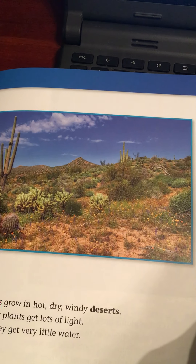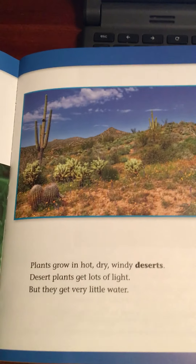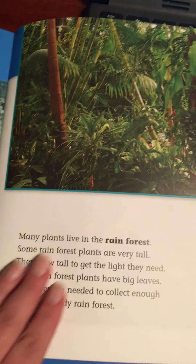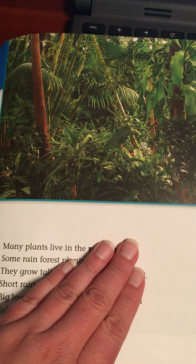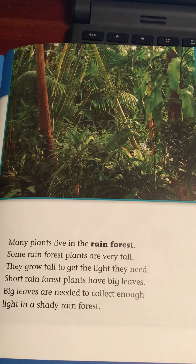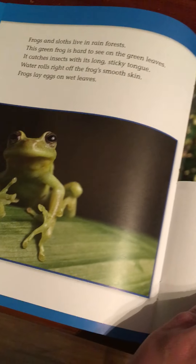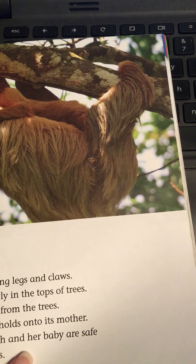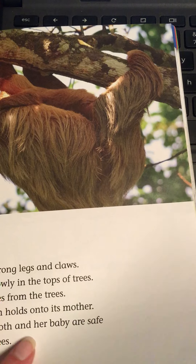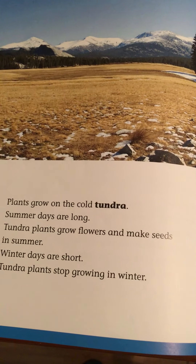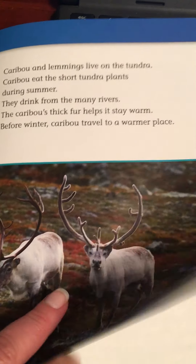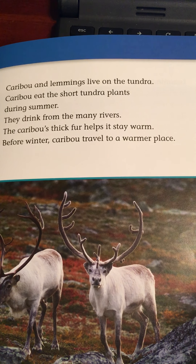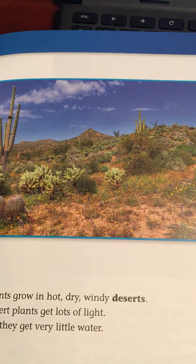We're going to do a quick review. A habitat that is wet and warm, where plants will grow and the plants grow very tall, is called a rainforest. Another habitat that is frosty and dry with long summer days is called a tundra. A habitat that is dry and windy, where cacti live, is called a desert.